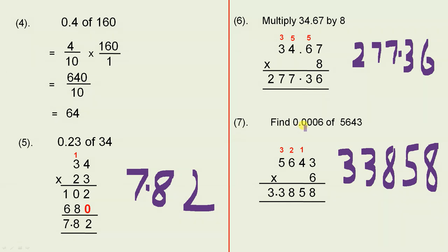In the original, we had 1, 2, 3, 4 digits after the decimal point. So you have 4 digits after the decimal point in the answer. So it's 3.3858.